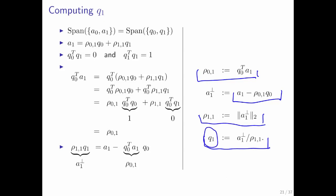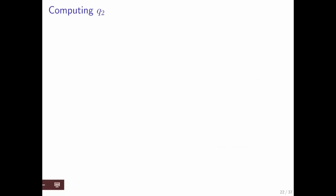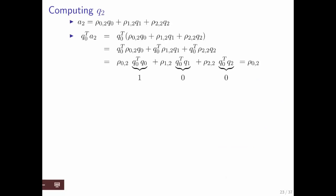We now have vectors q0 and q1 such that the span of those two vectors is the same as the span of a0 and a1. Let's take this one more step — what if we want to compute q2? Again, it has to be the case that a2 can be written as a linear combination of q0, q1, and q2. Otherwise, the vectors a0, a1, and a2 are not in the span of q0, q1, and q2.